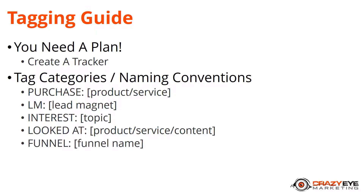I also use 'Funnel: funnel name' — so if they're within a specific micro sales funnel like a webinar funnel or a classic sales funnel, I can keep track of what funnels they're in. And I also use an 'Active' tag, which I'll go over in greater detail later in this course. I essentially assign this tag to individuals that are actively engaged in an automation, so I don't accidentally interrupt them by sending a broadcast email or something that distracts them from what they're being sold.